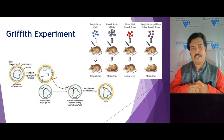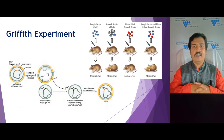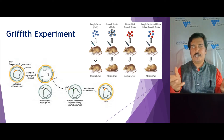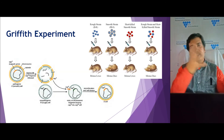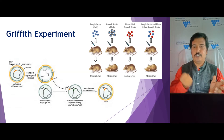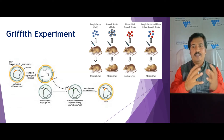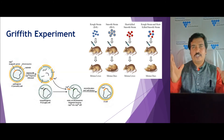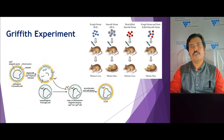He showed this with a graphical representation. The capsule-containing smooth strain carries a gene encoding the capsule that makes it virulent. Once heat-killed, the bacterial cell wall breaks down and the DNA is released. When mixed with the rough strain, the rough strain takes up the capsule gene, integrates it into its host genome, and is converted to a smooth strain by producing a capsule. This bacterial transformation was responsible for the death of the fourth group of mice.